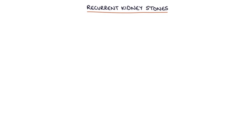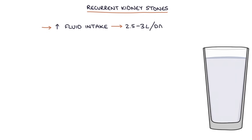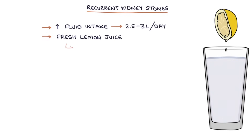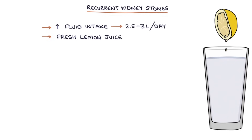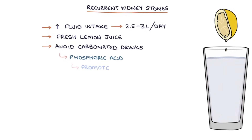One episode of kidney stones predisposes patients to further episodes. The NICE guidelines from 2019 recommend advising patients to increase oral fluid intake to 2.5–3 litres per day, add fresh lemon juice to water — because citric acid binds to urinary calcium reducing stone formation — and avoid carbonated drinks, as cola drinks contain phosphoric acid which promotes calcium oxalate formation.